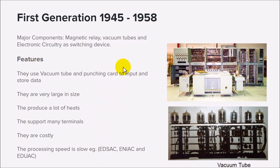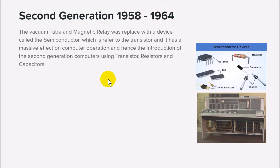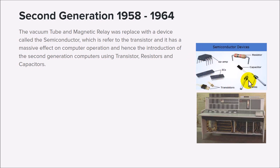The second generation ranged from approximately 1958 to 1964. The major change in the second generation is that the vacuum tubes and magnetic ray were replaced with semiconductors. Semiconductors include resistors, capacitors, and similar components. Instead of having the large magnetic ray and vacuum tubes as memory or instructional components, they were replaced with semiconductors, transistors, and diodes.